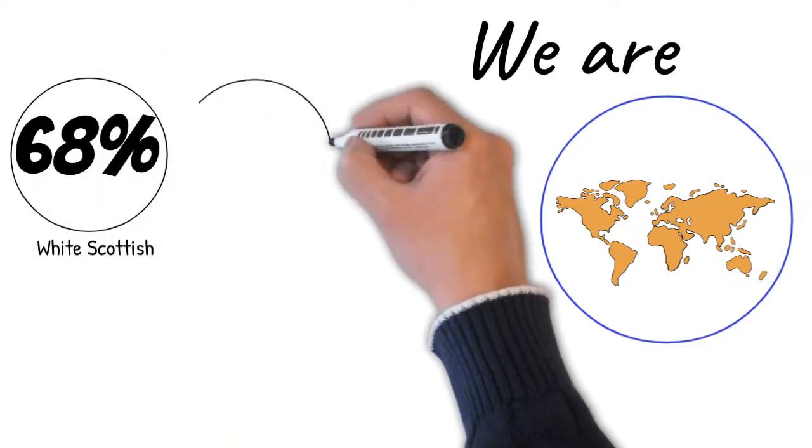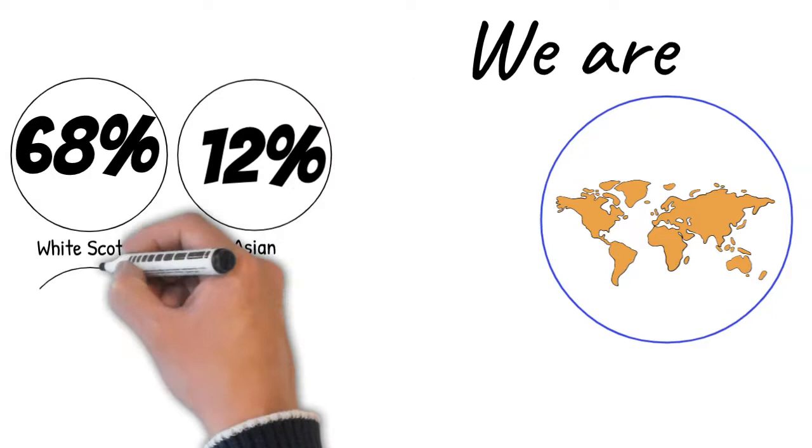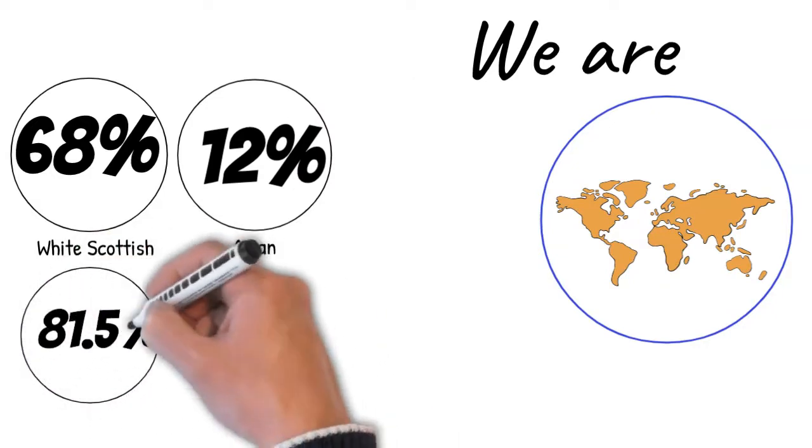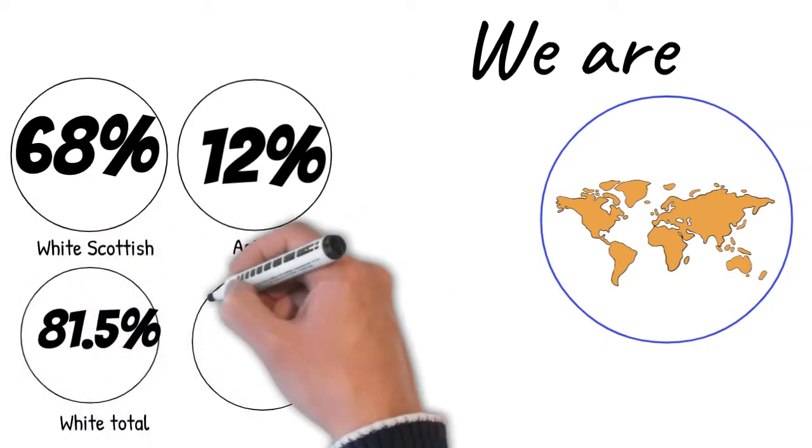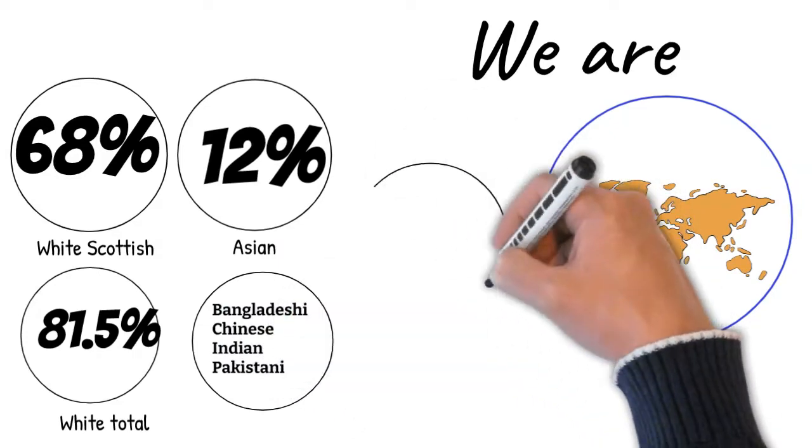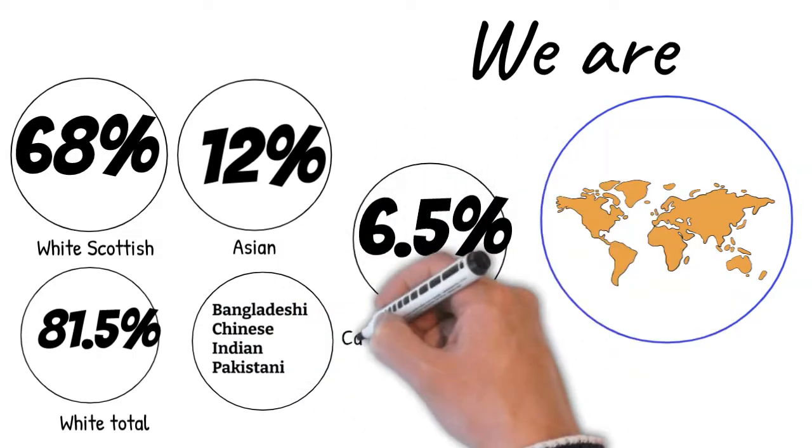18.5% identify themselves as Asian, black or other, meaning they have family roots in places like Bangladesh, China, India, Pakistan and the Caribbean, amongst others.